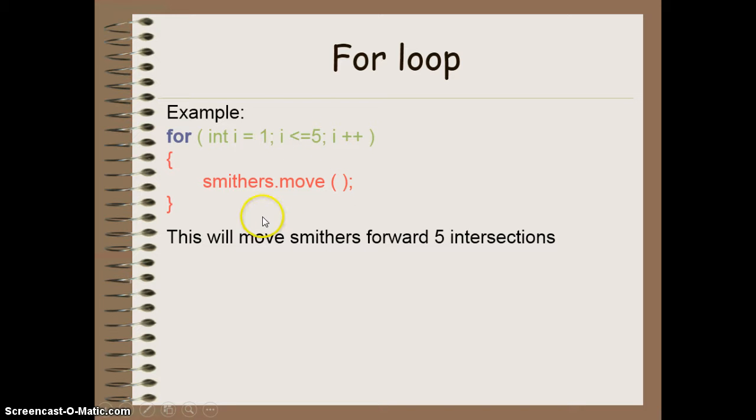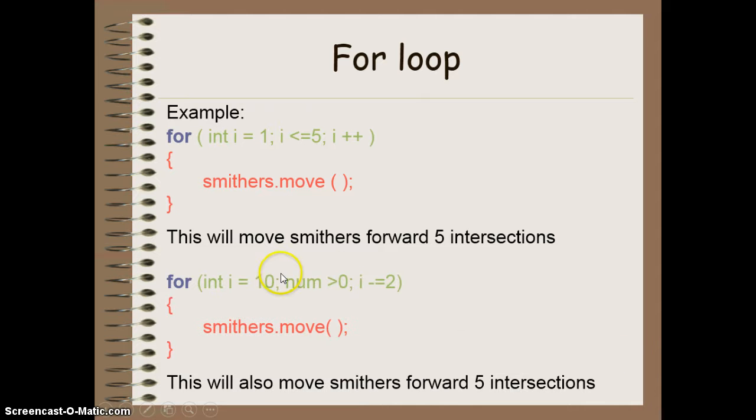We accomplish the same thing with a different counter, showing where we can set it at 10. And this time, we can have a negative, or decrementation. This will still go forward 5 intersections. It goes 10, minus 2 would be 8, minus 2 is 6, minus 2 is 4, minus 2 is 2. And then it would stop, because 0 is in fact not less than 0. 0 is equal to 0. So we'd move forward 5 times.